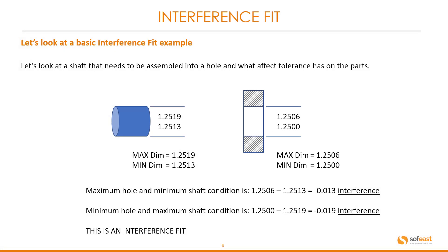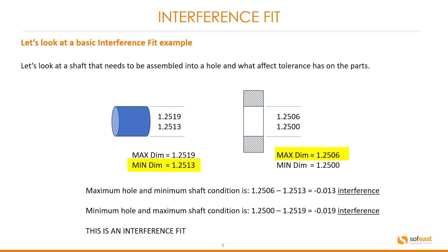Now let's have a look at the basic interference fit example. Our shaft maximum dimension is 1.2519 and minimum dimension is 1.2513, whereas the hole gives us a maximum of 1.2506 and a minimum of 1.2500. The maximum hole and minimum shaft condition gives us 1.2506 minus 1.2513, equaling a 0.013 interference fit. The minimum hole and maximum shaft condition gives us 1.2500 minus 1.2519, meaning we have a 0.019 interference. This is an interference fit.